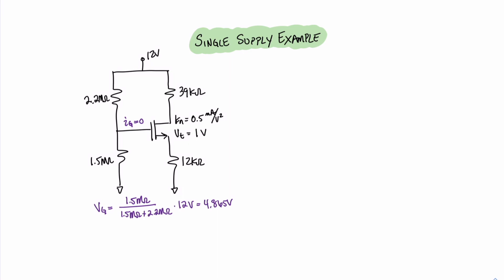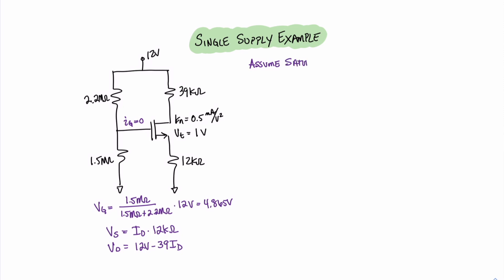Next, we can find the voltage at the source. Since below the source it's grounded and we have a 12 kilohm resistor, the voltage at the source is simply the drain current ID times 12 kilohms. Now we can find an equation for the drain voltage: VD equals 12 volts minus 39 times ID. Even though we know this is going to be in triode mode, let's go ahead and solve the problem assuming saturation mode so we can learn how to determine that we had an incorrect assumption.